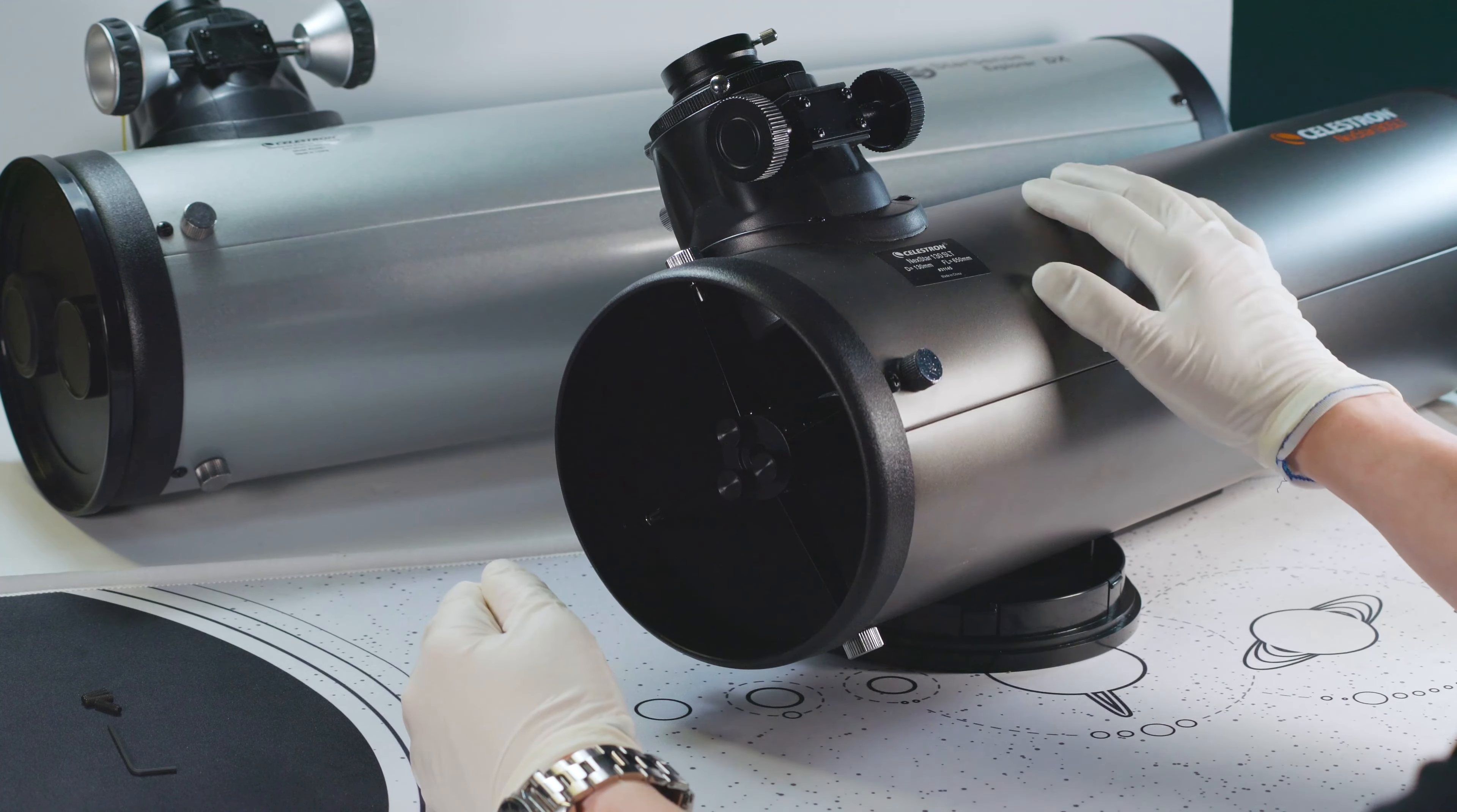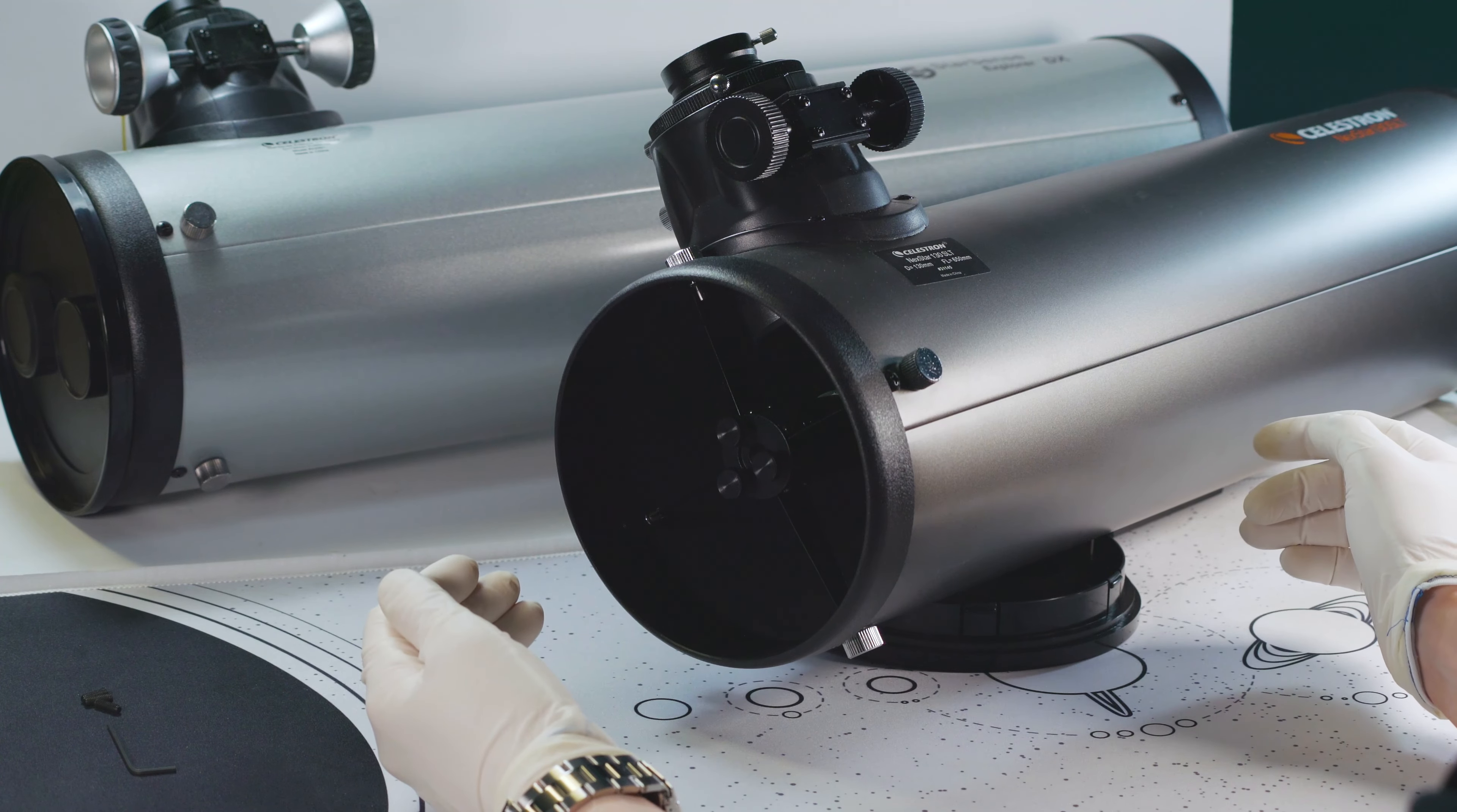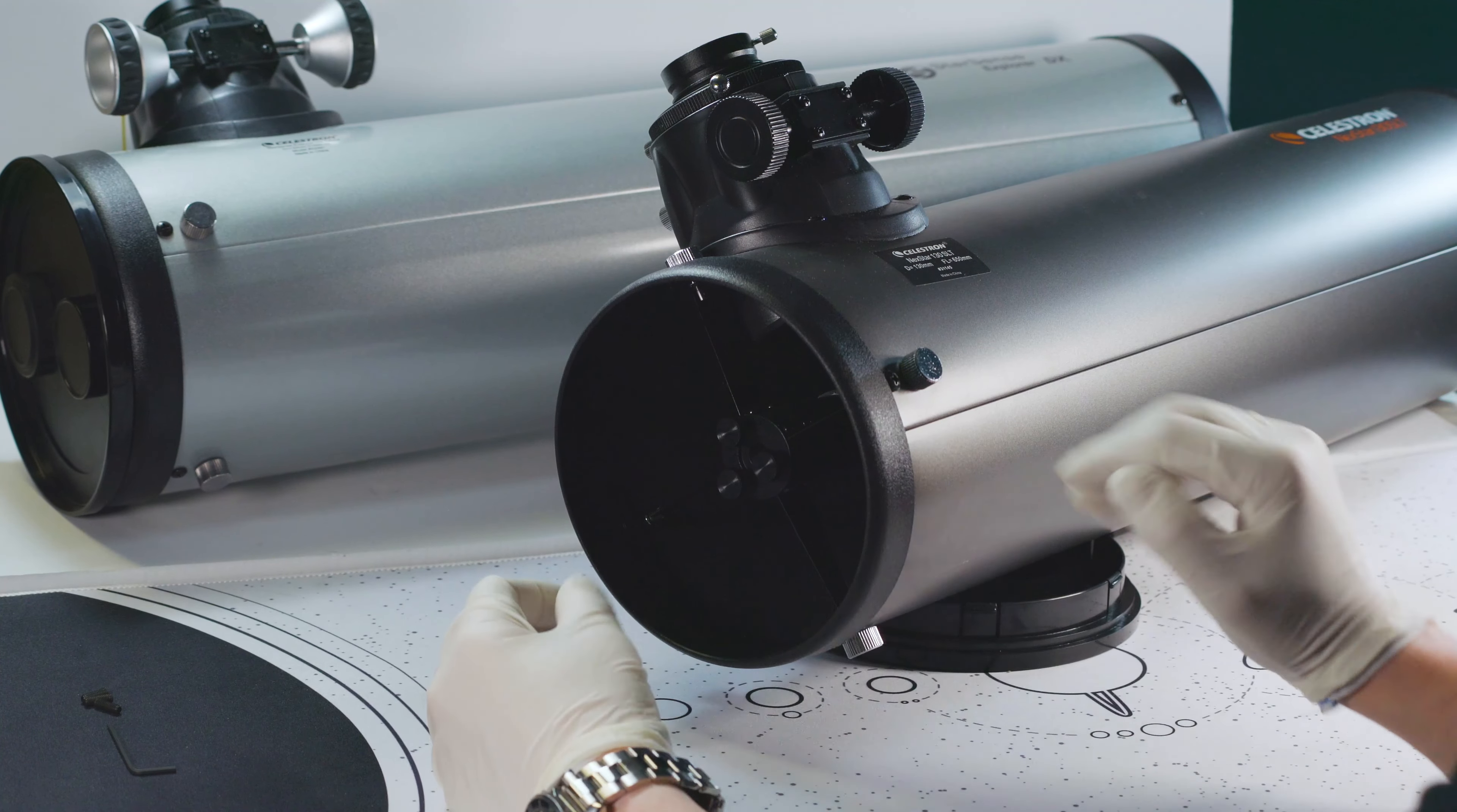Okay guys, so at this point your scope should be up and running with the upgraded collimation knobs and be ready for clear skies. If however you've run into any snags or issues, don't hesitate to shoot us an email or give us a call, as we're always happy to help. Additionally, if you found this guide helpful, we'd really appreciate if you could give us a like on the video down below. Now don't forget to subscribe for more how-to videos and more astronomy and astronomy product-based content. As always, I hope you guys found the video helpful. Thanks so much for watching, and until next time, clear skies.